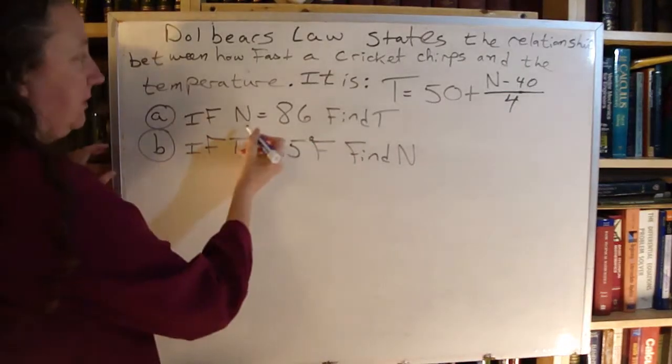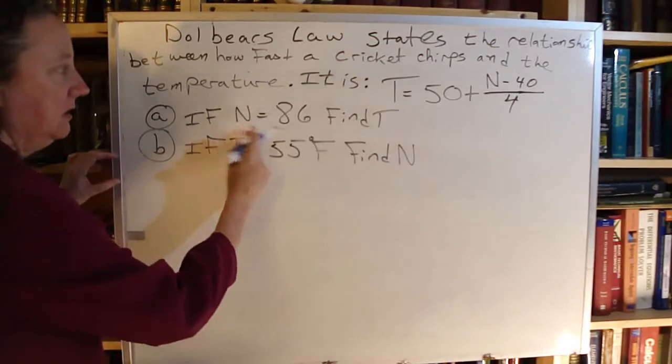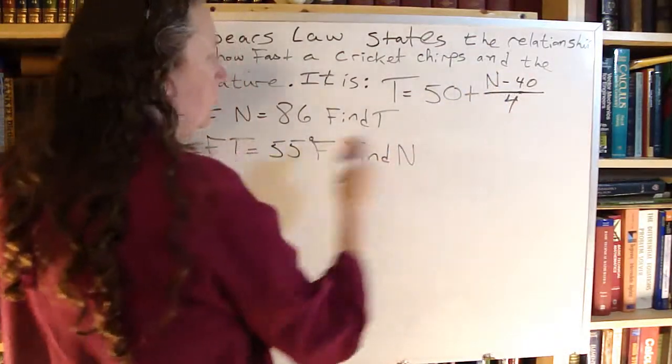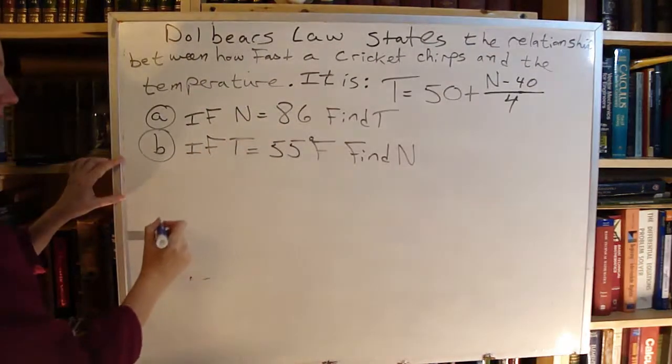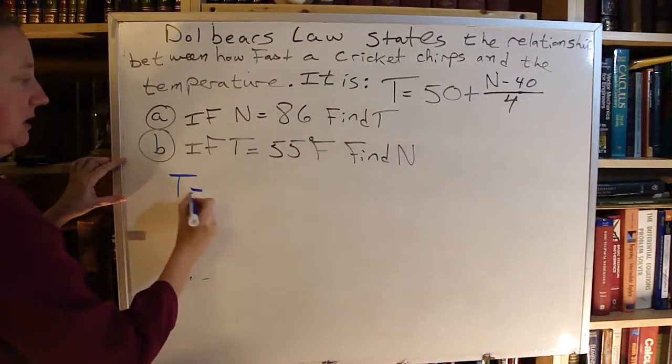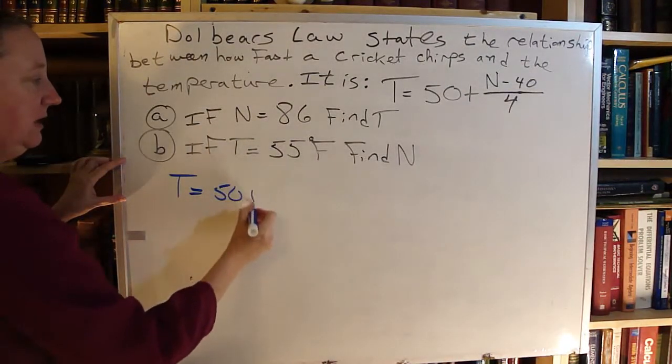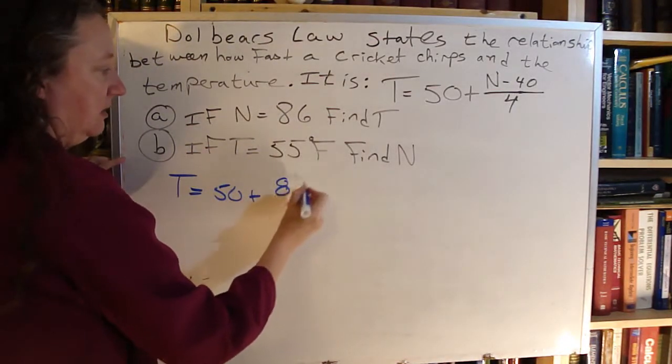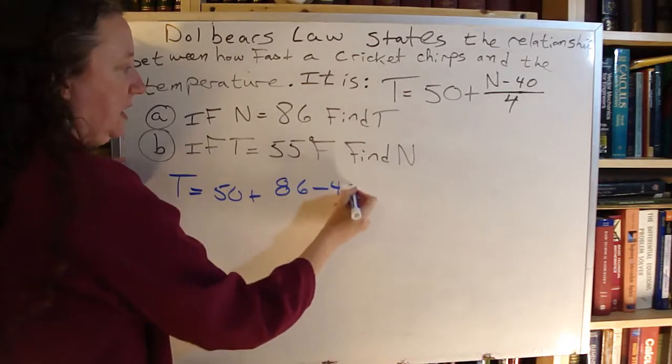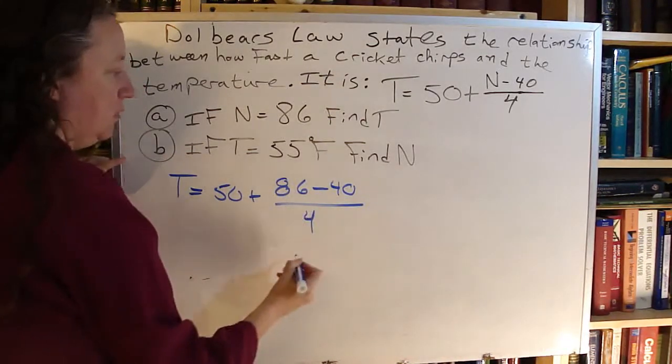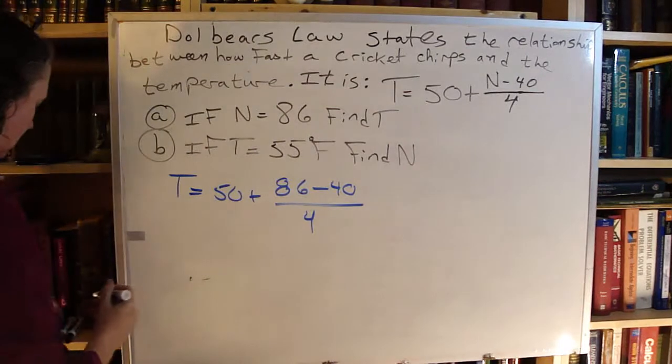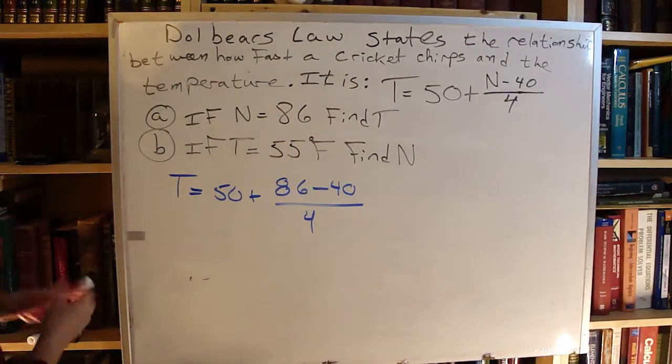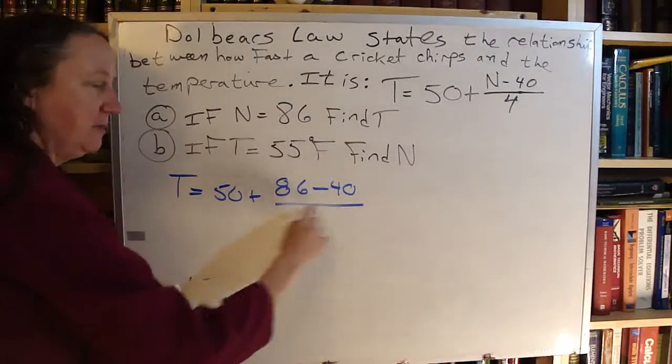I'm going to do this one first. I have N as given to me, it's 86. So I have to replace the N there with the 86. So I have T equals 50 plus 86 minus 40 all over 4. Order of operations. I have this giant fraction bar here.